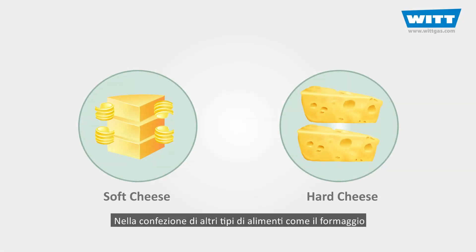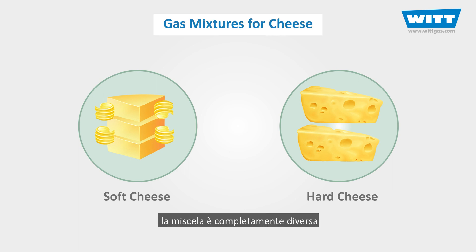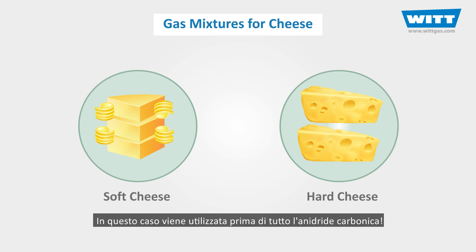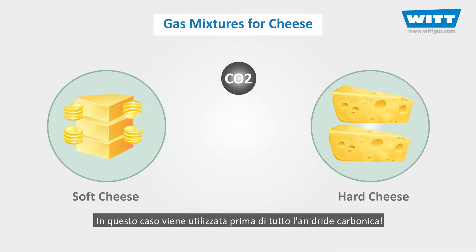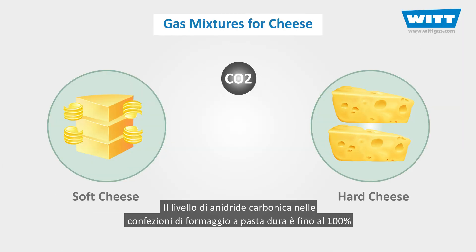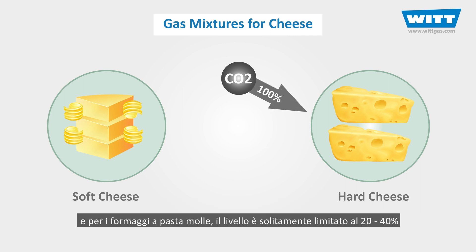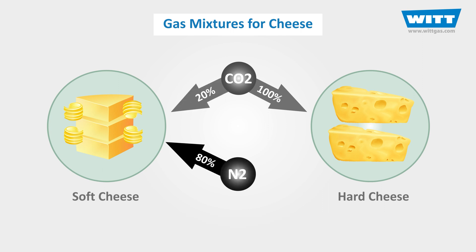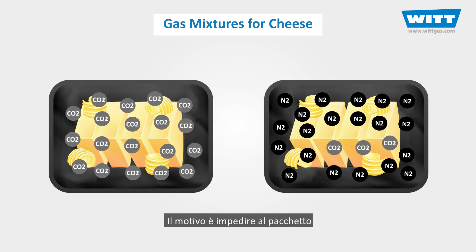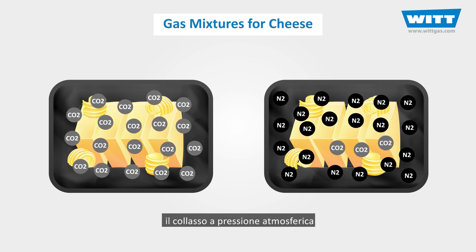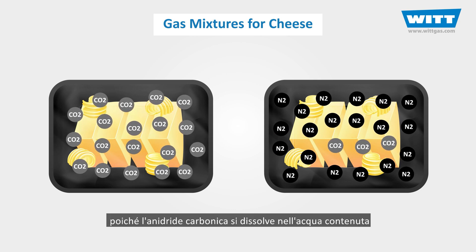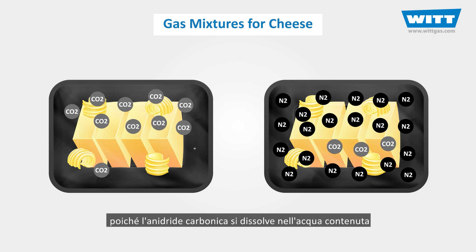In the packaging of some other types of foods, such as cheese, the mixture is completely different. In this case, carbon dioxide is used first and foremost. The carbon dioxide level in hard cheese packages is up to 100%, and for soft cheeses the level is usually restricted to 20–40%. The reason for this is to prevent the package from collapsing under atmospheric pressure as the carbon dioxide dissolves into the water content.